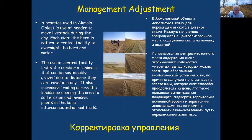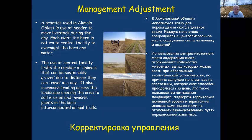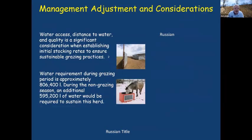One management practice used is herders: livestock are taken from a central confined area during the day to water and graze, then brought back at night. Using this central facility limits the number of animals that can be sustainably grazed due to distance they can travel in a day, increases trailing across the landscape, and could result in increased soil erosion and invasive plants in bare interconnected animal trails. Water access, distance to water, and quality is a significant consideration when establishing initial stocking rates to ensure sustainable grazing practice.